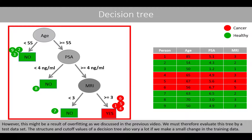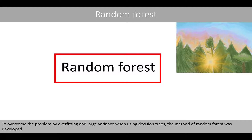However, this might be a result of overfitting as we discussed in the previous video. We must therefore evaluate this tree by a test dataset. The structure and cutoff values of a decision tree also vary a lot if we make a small change in the training data. To overcome the problem of overfitting and large variance when we use decision trees, the method of random forest was developed.